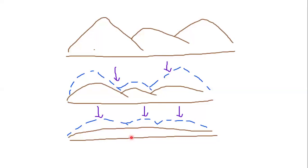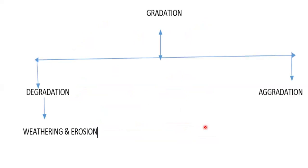Now, forces of gradation derive energy directly or indirectly from the sun. Gradation is responsible for the continuous modification of landforms on the surface of the earth. Gradation involves two processes: degradation and aggradation.